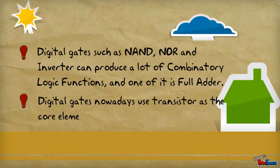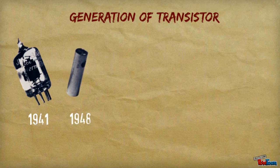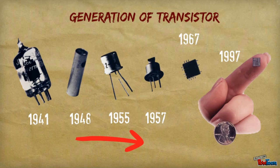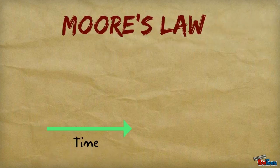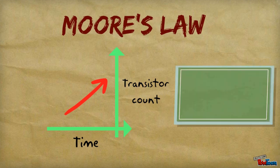Digital gates nowadays use transistors as the core element. The generation of transistors has evolved a lot and has been upgraded in terms of performance since it was discovered. Also, it is relatively known that the size of transistors has been decreasing as time went by. This follows the infamous Moore's Law, which states that with the increment of time the transistor count will be doubled every 18 months.